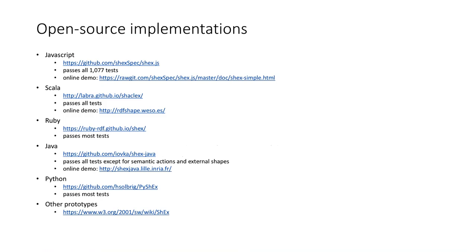The state of development: there are currently open source implementations in five programming languages — JavaScript, Scala, Ruby, Java, and Python. The JavaScript implementation is really the reference implementation for ShEx; it currently passes over a thousand tests. All of the other implementations use the same test suite. Most of them are pretty close to being complete, and work on ShEx is ongoing, so the functionality and tests continue to be developed.